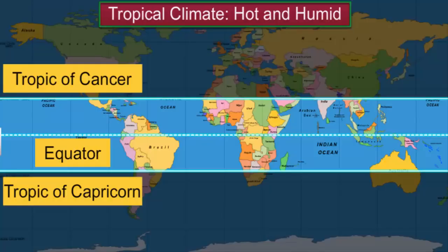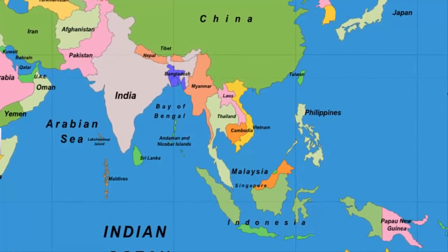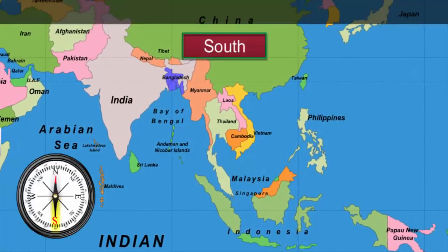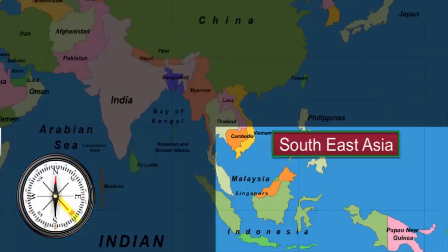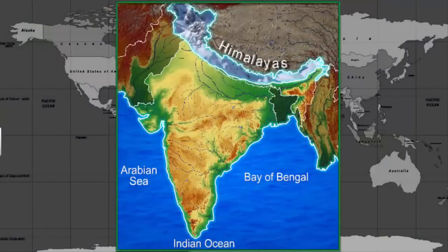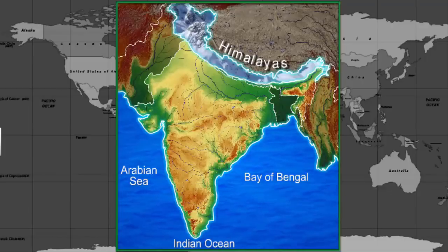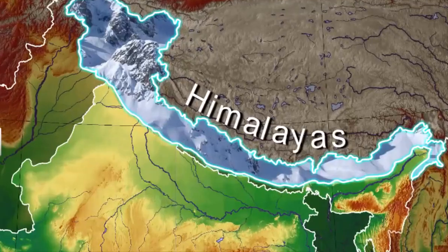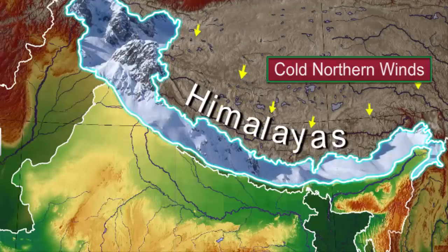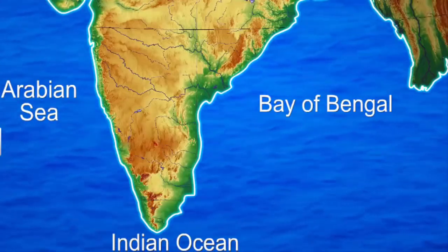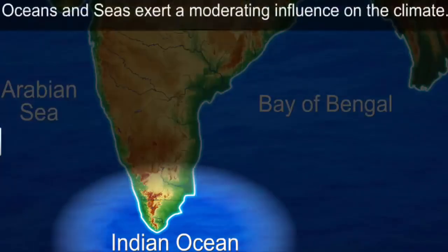Tropical climate is found mainly in South and Southeast Asia. India's unique physical setting imparts uniformity to its climate. India is flanked by towering mountains in the north, which block the cold bitter winds blowing from the northern hemisphere. On the remaining three sides, it is surrounded by oceans and seas that exert a moderating influence over the subcontinent.